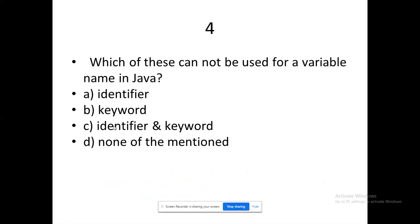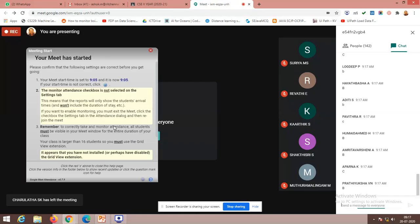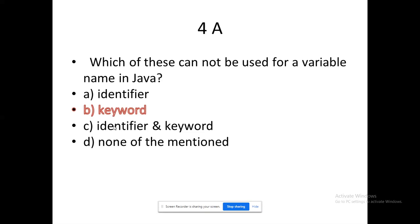Question number four: which of these cannot be used for a variable name in Java? We have seen the rules for naming variables, and from that this question was raised. The answer is a keyword — keywords should not be used as variable names. Built-in words cannot be used as variable names. An identifier represents your variable, and even function names and class names come under the umbrella of identifiers.